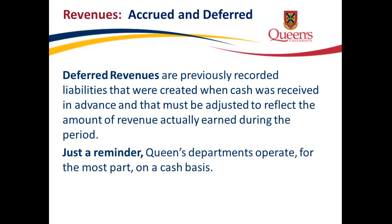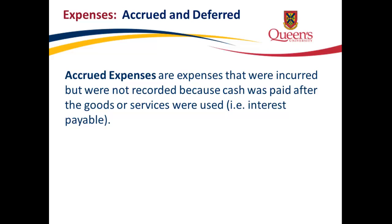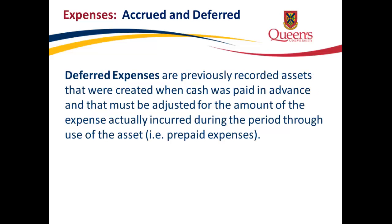Deferred revenues are previously recorded liabilities created when cash was received in advance and that must be adjusted to reflect the amount of revenue actually earned during the period. A reminder: Queen's departments operate for the most part on a cash basis. Accrued expenses are expenses that were incurred but not recorded because cash was paid after the goods or services were used — for example, interest payable. Deferred expenses are previously recorded assets created when cash was paid in advance and that must be adjusted for the amount of the expense actually incurred during the period, such as prepaid expenses.